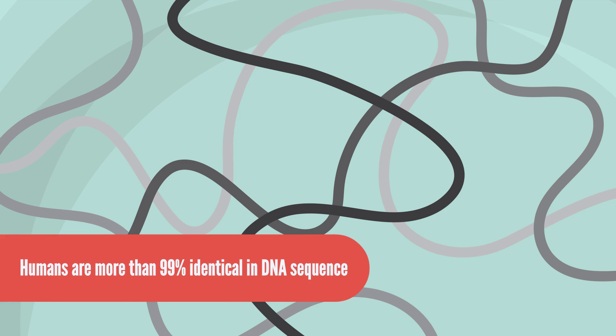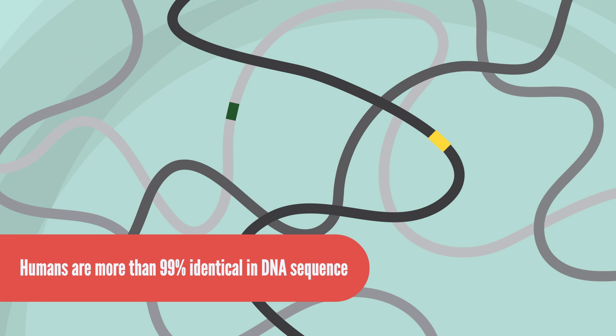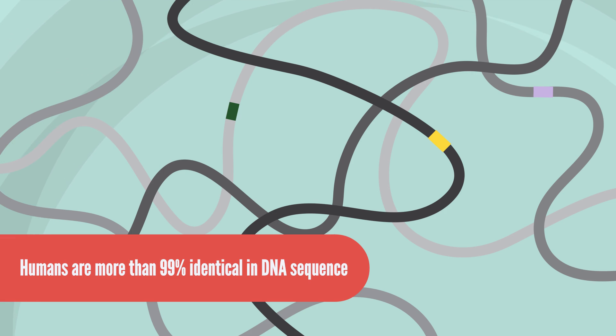DNA is a code that consists of four letters: A, G, C, and T. Because more than 99% of the DNA in all humans is identical, the ancestry testing company only looks at the small regions in Daisy's DNA where variation between people is common.